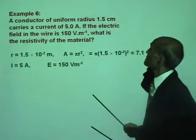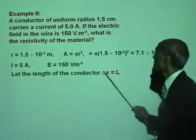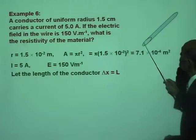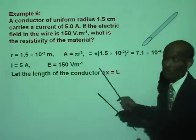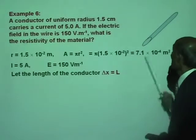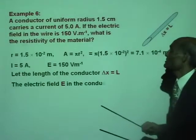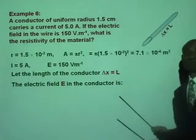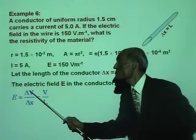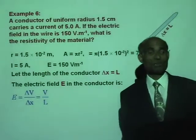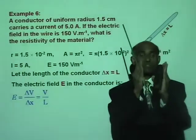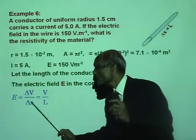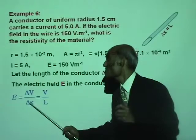We have the electric field. Let the length of the conductor delta X be equal to L. Here is the conductor — the cross-section looks oval, but it's supposed to be a circle. The length of that conductor delta X equals L. The electric field is E in the conductor. You know that E equals delta V over delta X. The electric field between two electrodes maintained at a potential difference delta V, and if the distance between the two electrodes is delta X, then E is delta V divided by delta X.